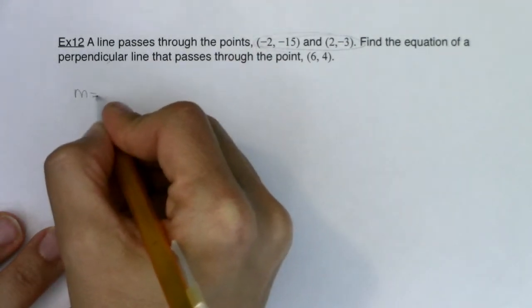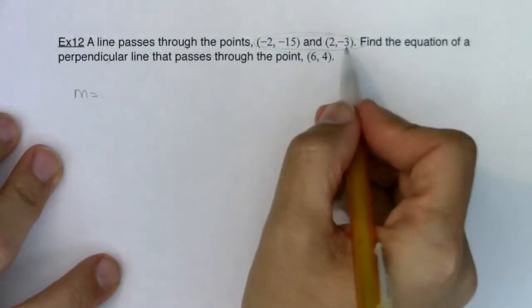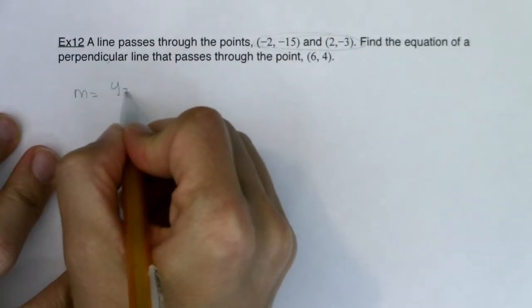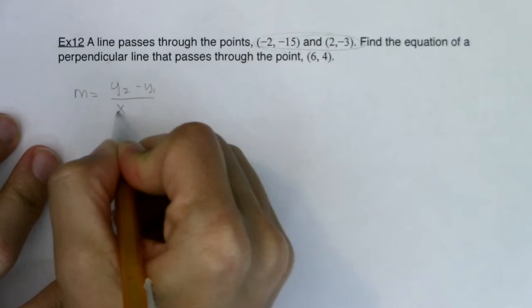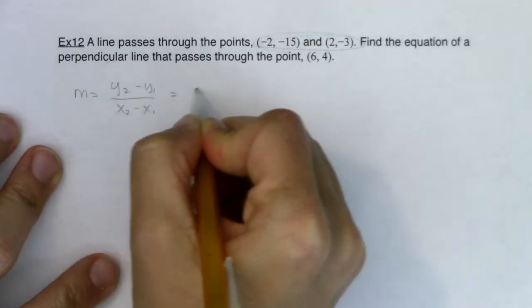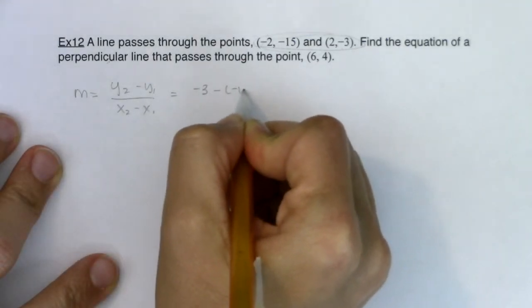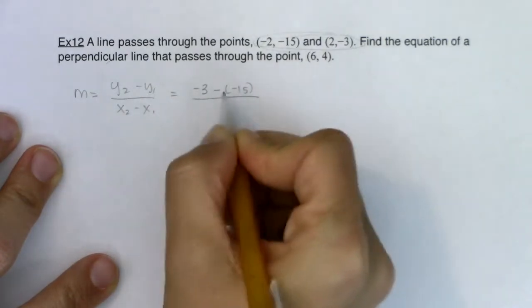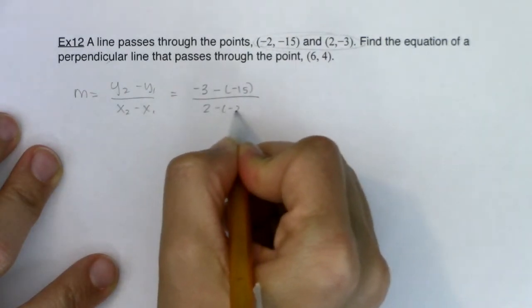My slope here would be change in y over change in x. So I'll write out the formula. In this case, we're going to have (-3) minus (-15) in ratio to 2 minus (-2).